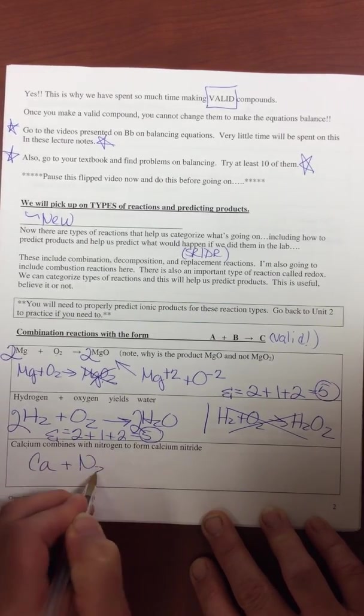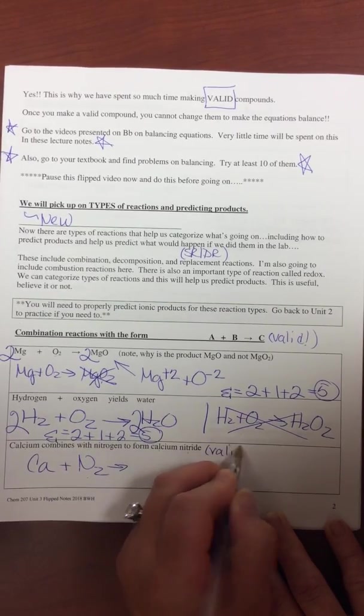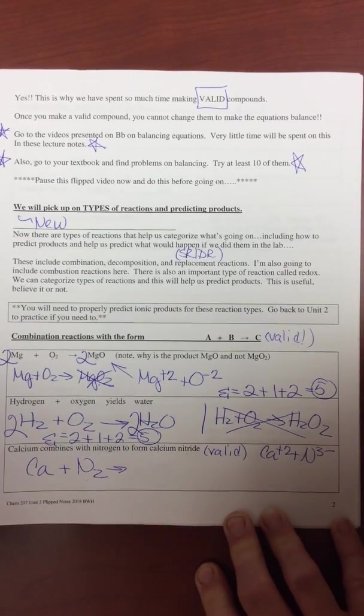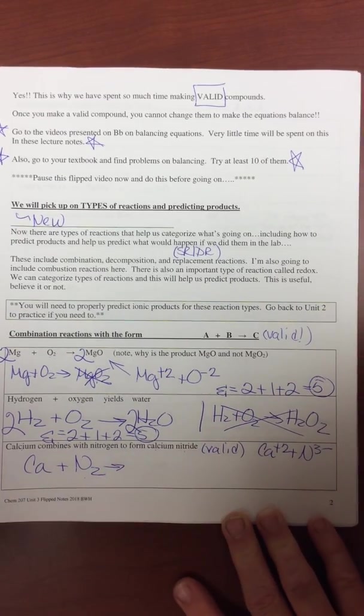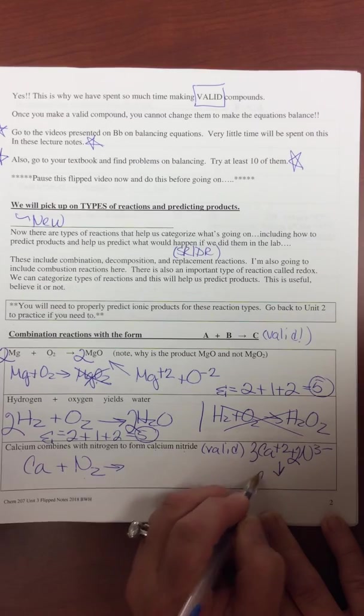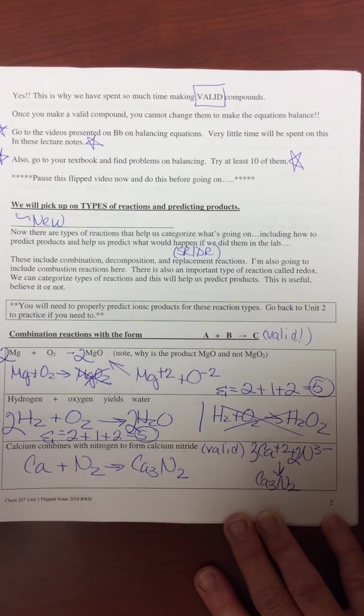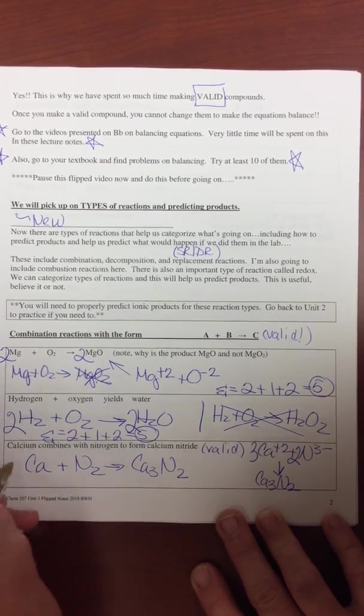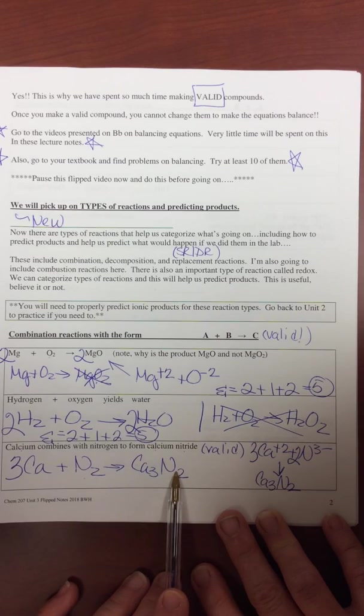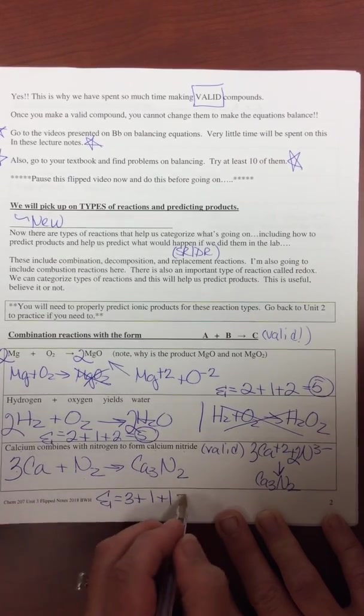Calcium combines with nitrogen, which is also diatomic, to form calcium nitride. Well, you have to make a valid calcium nitride. Ca2+ N3-. If you don't remember how to do that, again, you need to go to your periodic table. 2 and 3 always make 6. So our valid formula is Ca3N2. 1 calcium in, 3 calciums out. So we need a stoichiometric coefficient of 3. 2 nitrogens here, 2 nitrogens there. So now we're balanced. The sum will be 3 plus 1 plus 1, 3, 1, and 1 equals 5.